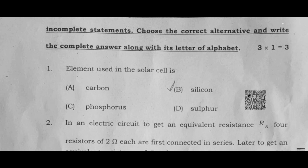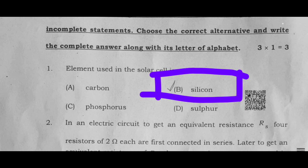The first question, the correct answer is B. Silicon is the correct answer. B is the correct answer for the first physics MCQ.